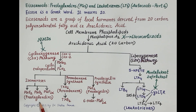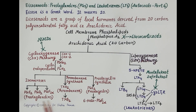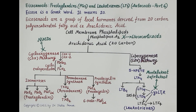Prostaglandins are so named because in 1930 they were first isolated from seminal fluid produced by the prostate gland. Leukotrienes are so named because the term 'leuko' refers to leukocytes (WBCs) and 'trienes' refers to three conjugated double bonds.